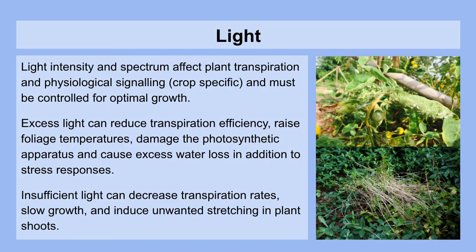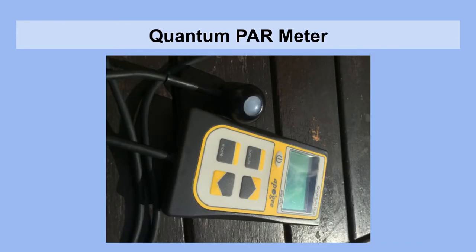Excess light can reduce transpirational efficiency, raise foliage temperatures, and damage the photosynthetic apparatus, causing excess water loss in addition to stress responses. Insufficient light, on the other hand, can decrease transpiration rates, slow growth, and induce unwanted stretching in plant shoots that usually lowers their quality. In the greenhouse, you need to have a quantum PAR meter and make sure that it's full spectrum. If you want to have an idea of the spectrum of light that you're receiving, then you actually have to have a spectrum analyzer.